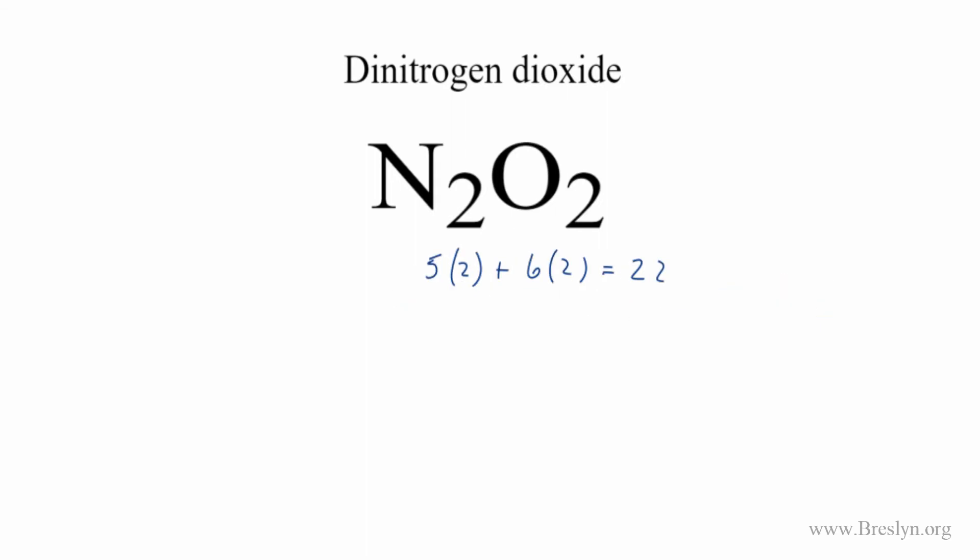So we'll place the least electronegative elements in the center of the Lewis structure. Nitrogen is less electronegative than oxygen. So let's put a nitrogen here, put another one here, and then we'll put the oxygens on the outside.